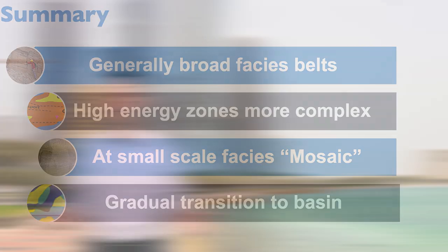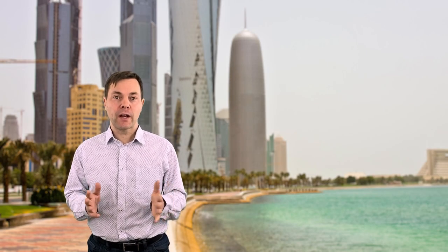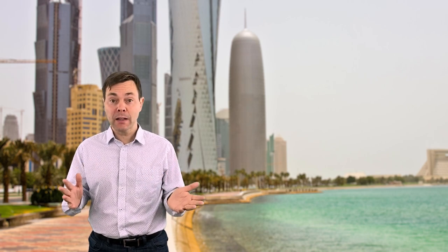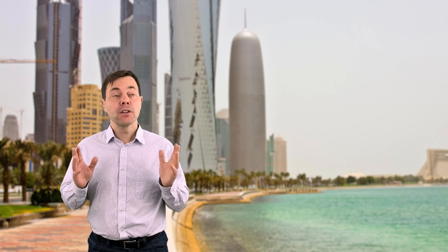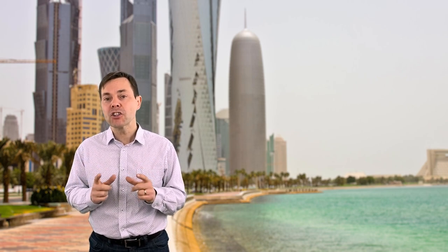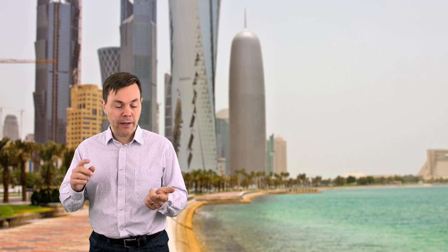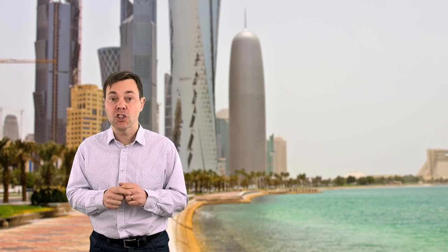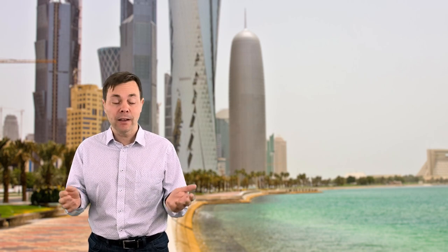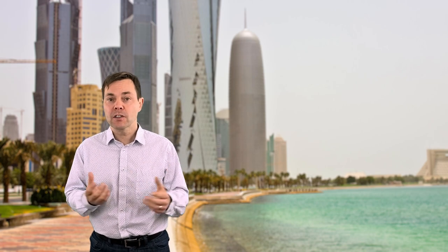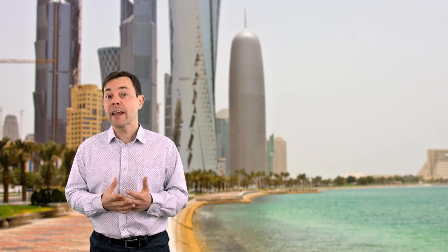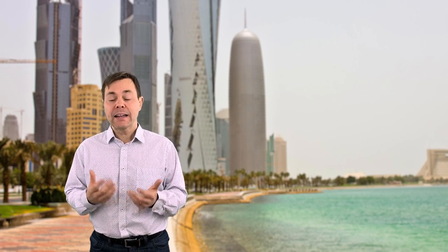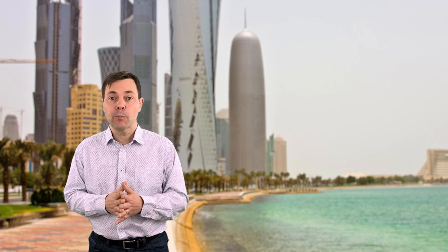To sum up what we've learned about the Arabian Gulf: generally we are looking at broad facies belts on the ramp, but the devil is in the detail — especially in the high energy zone, where we tend to have more complexity. Keep in mind those reticulated reefs with intricate geometry at the 100-meter scale, and the sand shoals with lots of patch reefs. At the small scale we're looking at a mosaic of facies within broader belts.